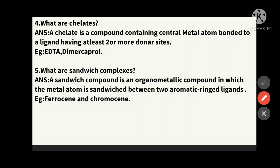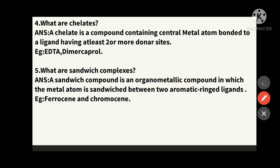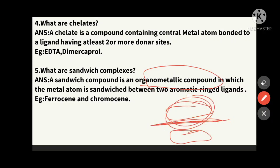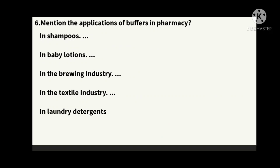The fifth question: what are sandwich complexes? A sandwich compound is an organometallic compound in which the metal atom is sandwiched between aromatic ring ligands. Just as a sandwich has two breads enclosing vegetables, here the metal atom is sandwiched between two aromatic rings. Examples: ferrocene and chromocene — these are the two sandwich complex examples.